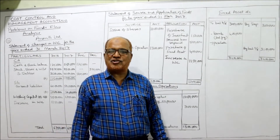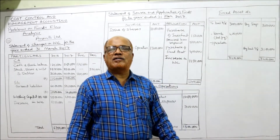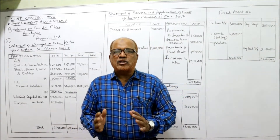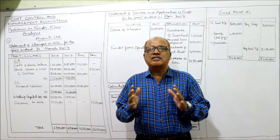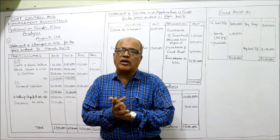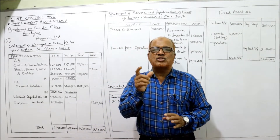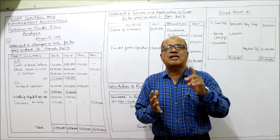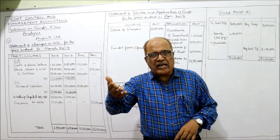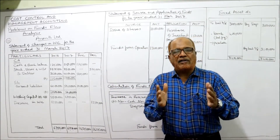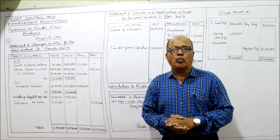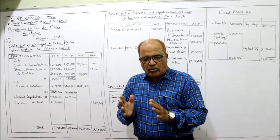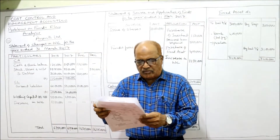Hello everyone, welcome to my channel. I'm Harsham Ali Khan. So far 10 problems I have completed on funds flow analysis. In this video, the 11th and 12th problems I'm going to continue. After doing 10 problems, you are aware about the statements we have to make in funds flow analysis. The first statement is the statement of changes in working capital, where we take current assets and current liabilities to find out whether there is increase or decrease in working capital. After that we make the statement of source and application, where we take all non-current assets and non-current liabilities.